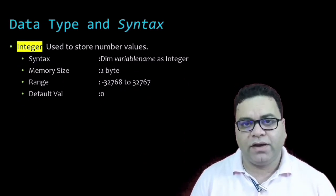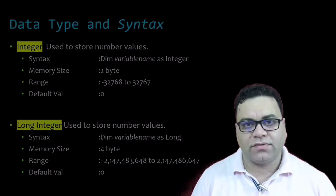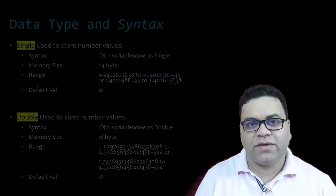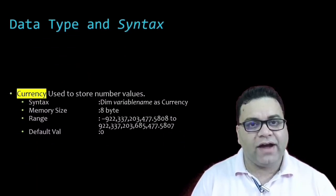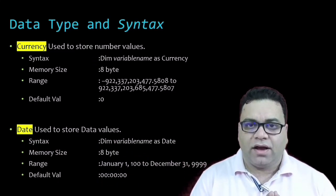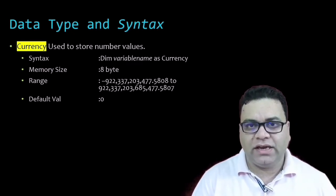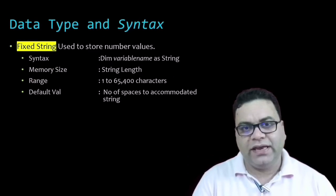Now it's time to discuss data types. There are 13 data types available in VBA. The first is Integer, which contains numbers. The second is Long, which also contains numbers but is used for bigger numbers. Then we have Single and Double, which also store numbers. Currency is used when dealing with a specific currency — dollars, rupees, pounds, etc. Date is used for storing and calculating dates. String is used to store any characters or names.